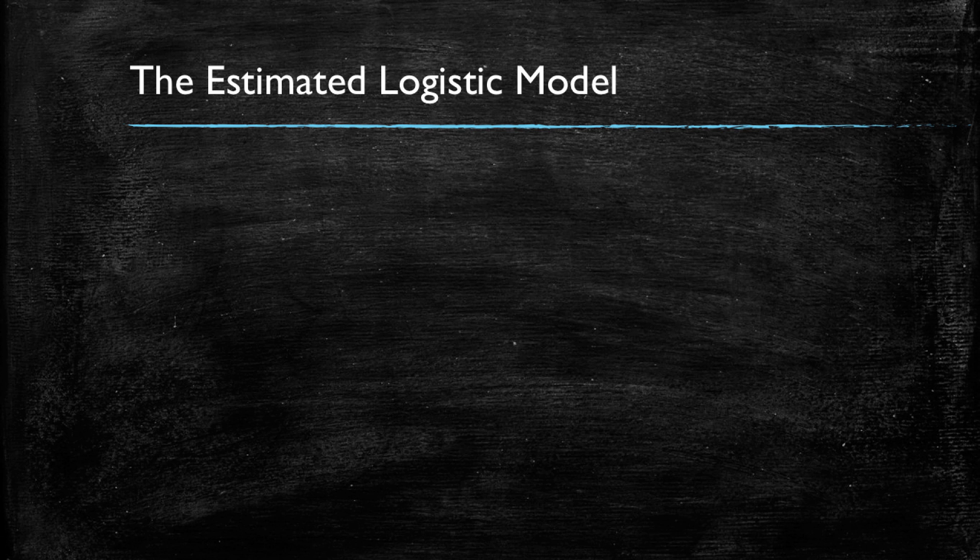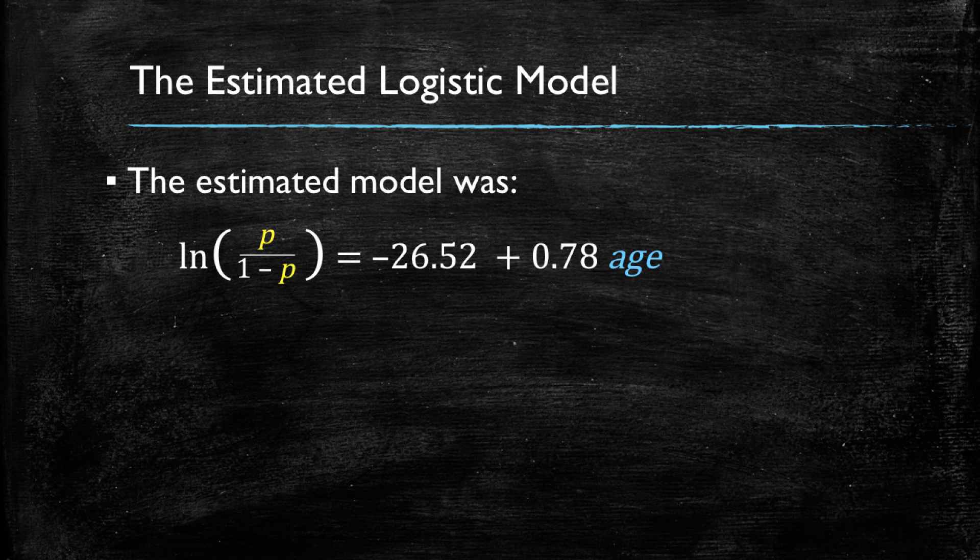For now, let's simply note that the model we estimated, given that our dependent variable is the log of p over 1 minus p is minus 26.52 plus 0.78 times age.